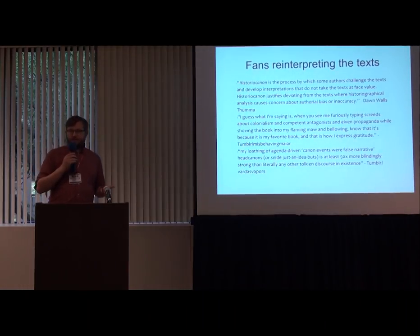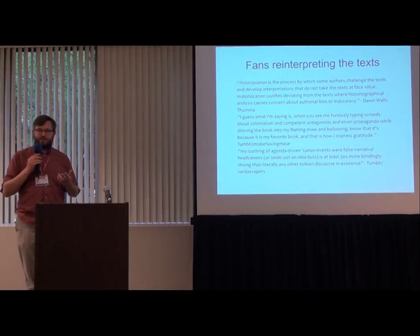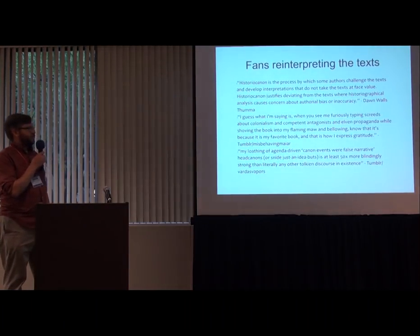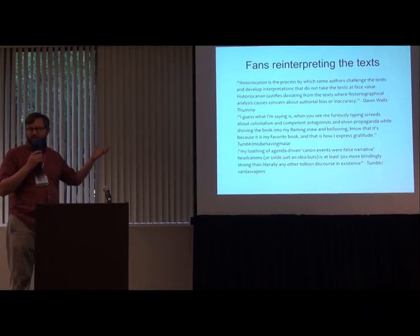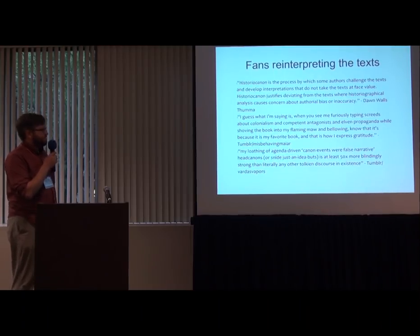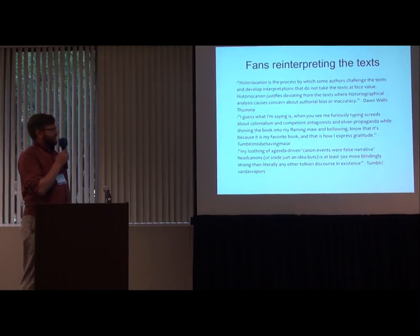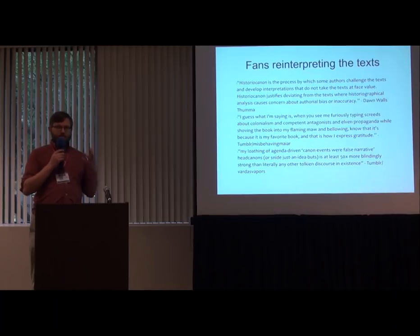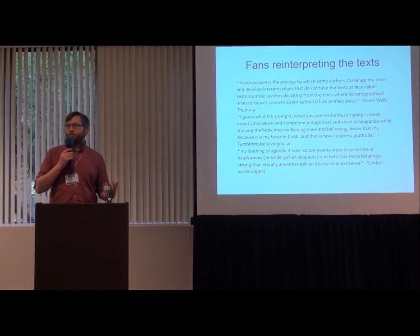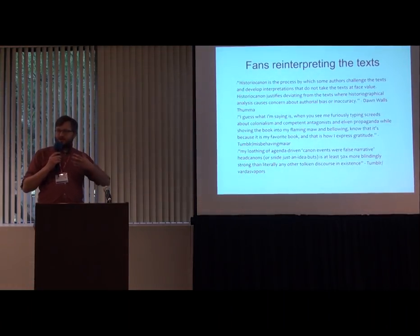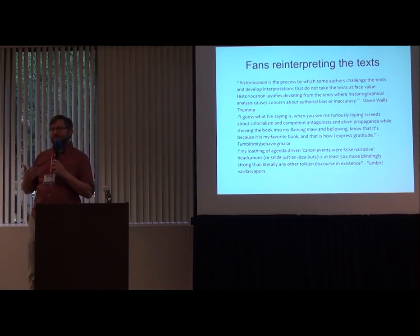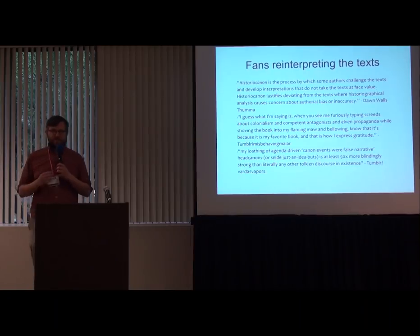I want to look at how the fan community approaches cartography in Middle-earth and compare it to how the fan community approaches the written texts. I'm drawing on Dawn Wallstuma's idea of historiocanon. She says historiocanon is the process by which some authors — fan fiction authors — challenge the texts and develop interpretations that do not take the texts at face value. Historiocanon justifies deviating from the texts where historiographical analysis causes concern about authorial bias or inaccuracy. In other words, a lot of people in the fan community have embraced this idea that Lord of the Rings, for example, is a document from within the world, written by particular people, and rather than treating it as a set of facts about Middle-earth, we treat it as a historical document that we can criticize and read between the lines — the same way Tolkien would read between the lines of Beowulf or the Finnsburg Fragment.